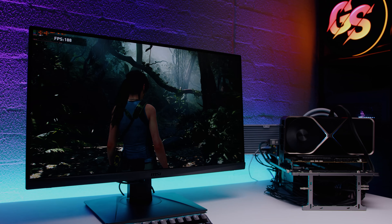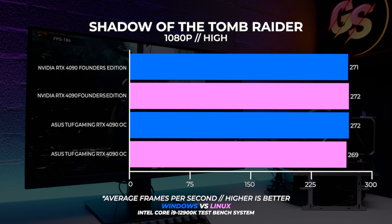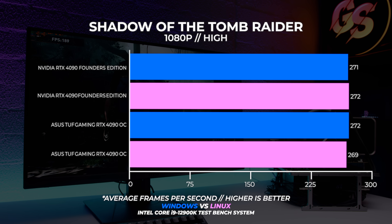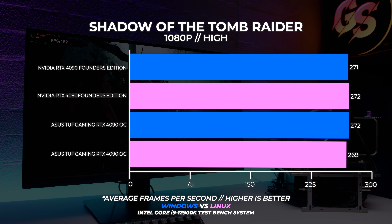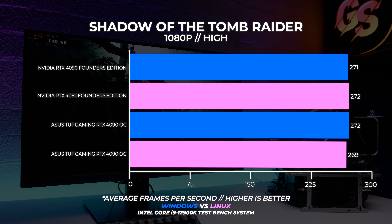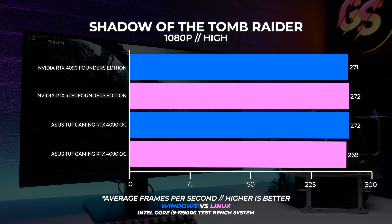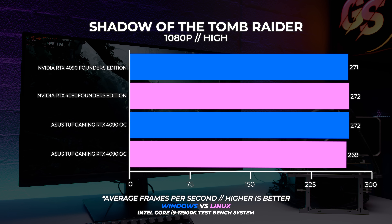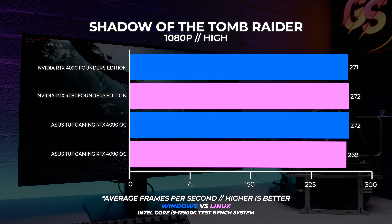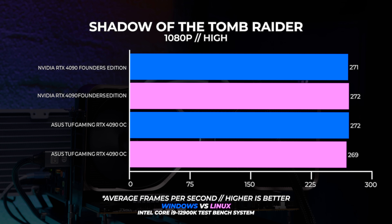Let's kick it off with Shadow of the Tomb Raider. You can use that magic pause button at any time during the video to take a look at these graphs for a little bit longer. The first thing you're probably noticing, even at 1080p with this benchmark, is that no matter what OS you choose the results are almost identical within a margin of error. The ASUS tough card and the Founders card even have the exact same performance in Windows and Linux when compared to each other.